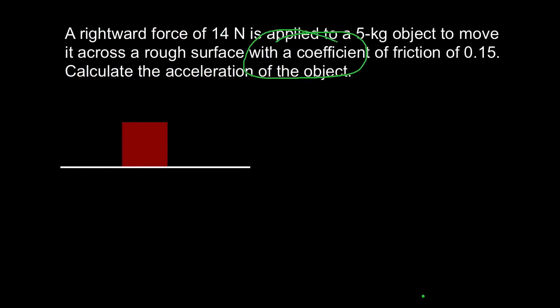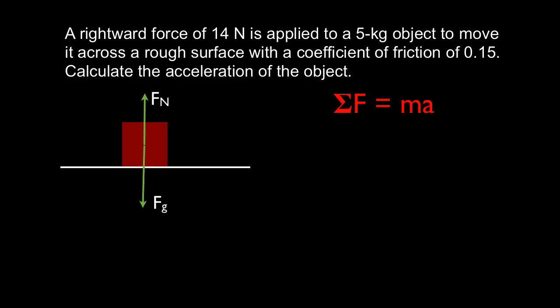Let's do one more. A rightward force of 14 Newtons is applied to an object with a mass of 5 kilograms across a rough surface. This time they gave us the coefficient of friction, and we're going to have to calculate the friction force and then calculate the acceleration. We're going to use Newton's second law, F equals MA. Before we can do that, we need to draw all the forces: gravity downwards, normal force up, a rightward applied force of 14 Newtons, and the friction force in the opposite direction.